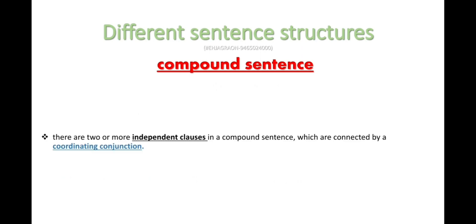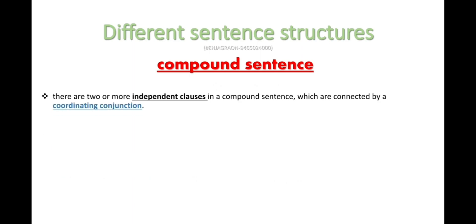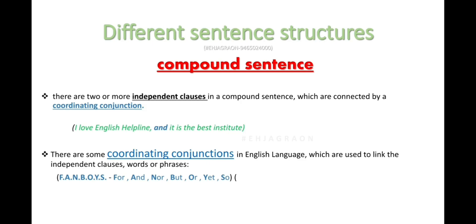Next is the compound sentence. In this case, there are two independent clauses connected by a coordinating conjunction. For example: 'I love English Alpine and it is the best institute.' We use both clauses and both carry complete meanings. We can identify it as a compound sentence using FANBOYS conjunctions. For example: 'Father went to work but his son went to the party and his daughter went home.'